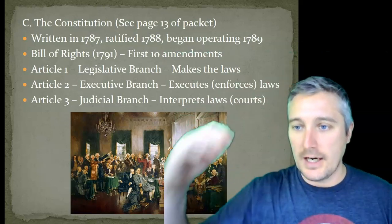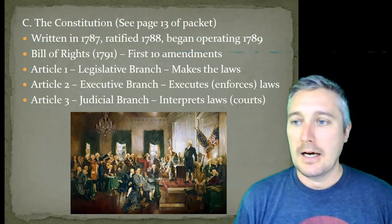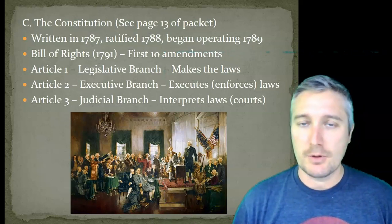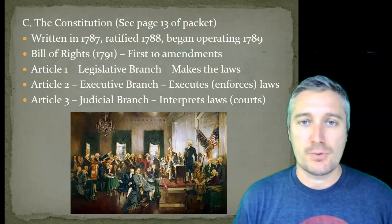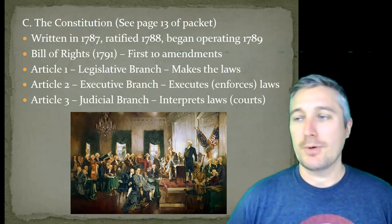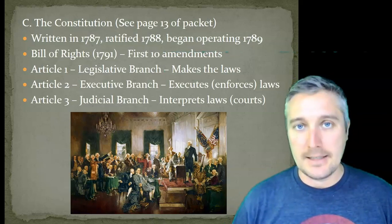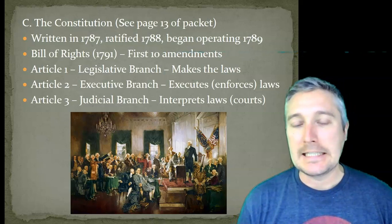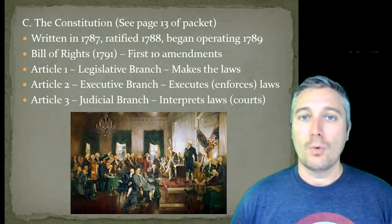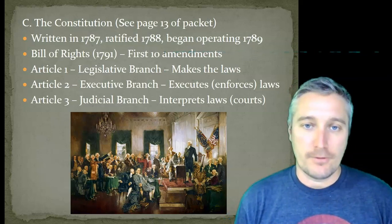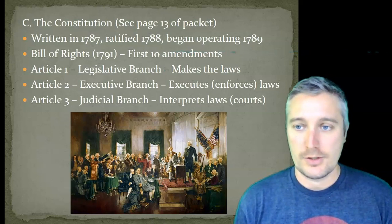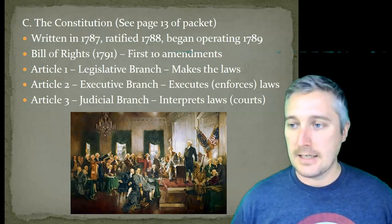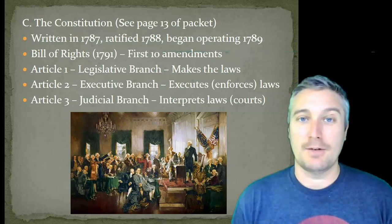We are going to begin with the writing of the Constitution — the framework, how is this all set up? The Constitution itself was written in 1787. The ratification process, where each state would have to approve the Constitution, began the following year, 1788, and they had enough states ratify it that it took effect in 1789. The Bill of Rights, which we mentioned at the end of our last lecture, would come two years later in 1791, and they are the first 10 amendments to the Constitution.